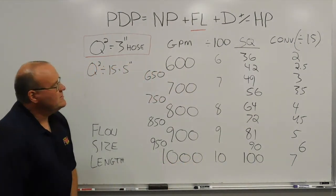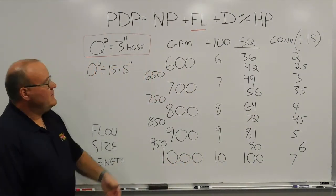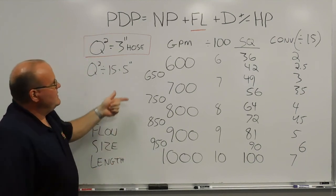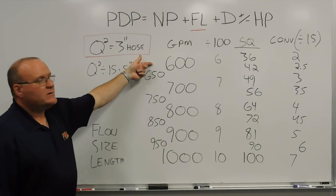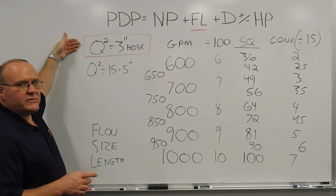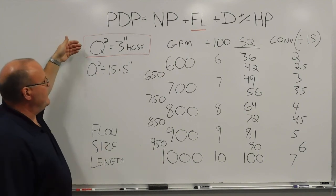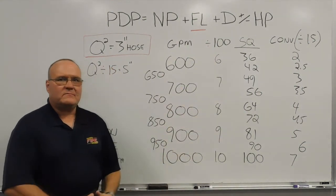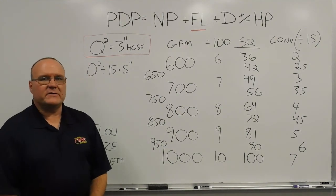So, conversion factor for 5 inch hose, starting with the 3 inch hose method, the Q squared, the hand method, gallon per minute divided by 100, square that number to get 3 inch hose. And then conversion factor for 5 inch hose is to divide that by 15. And you end up with the friction loss there. That's today's training minute for hydraulics. Thank you.